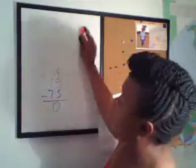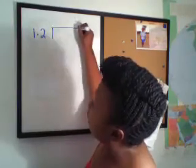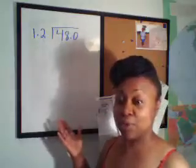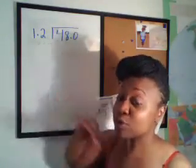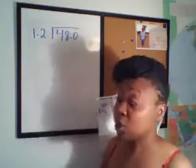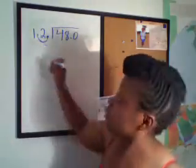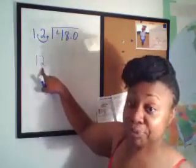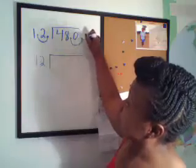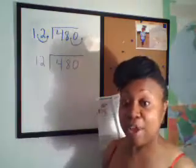Let's try another one. I'm going to try 48.0 divided by 1.2. Now I'm looking at this and I'm saying to myself: my divisor is a decimal, so I have to turn it into a whole number. I'm going to move the decimal all the way to the right — in this case I only had to move one space, so 1.2 becomes 12. Same thing I do in the divisor, I must do in the dividend. I'm going to move over one space to the right, so my 48.0 becomes 480. Now I can divide normally.